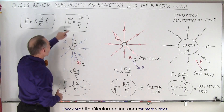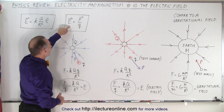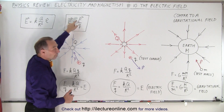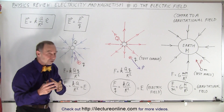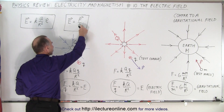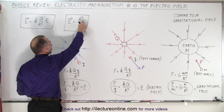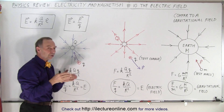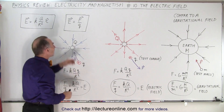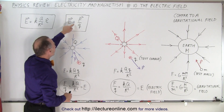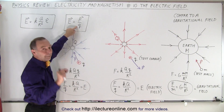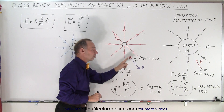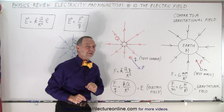The electric field is therefore equal to the ratio of the force experienced by a test charge divided by the size of the test charge. In vector format, the direction of the field is equal to the direction of the force experienced by a positive test charge. So by definition, the test charge must be positive.